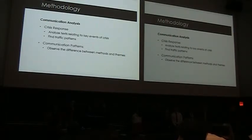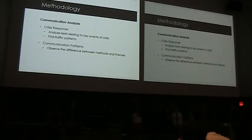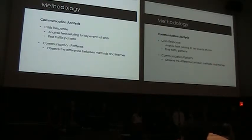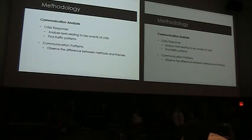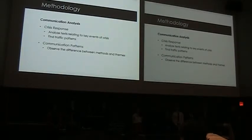Due to the volatile nature of the dark internet, it has frequently been affected by crisis events — such as the closure of the Silk Road and other dark internet marketplaces. The second portion of our methodology involves analyzing how communities within the dark internet react to these crises. Specifically, we will go to message boards and forums on the dark internet, analyze their text in relation to key crisis events, and look for any recurring patterns in traffic or communication that occur as a result.